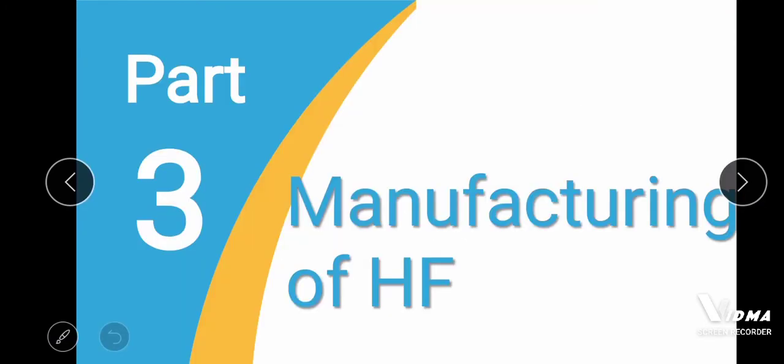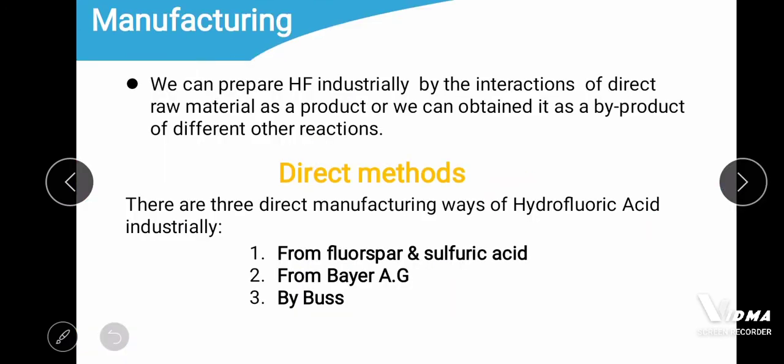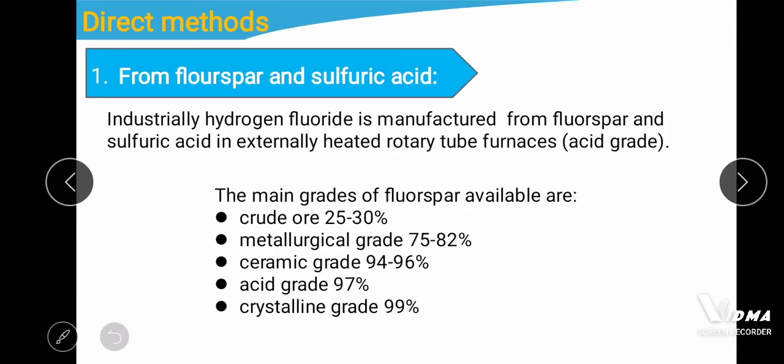Part 3, the main part of the presentation, covers the manufacturing of hydrofluoric acid. There are three manufacturing methods: production from fluorospar and sulfuric acid, the Bayer AG method, and the Buss method. Internationally, hydrogen fluoride is manufactured from fluorospar and sulfuric acid in extremely heated rotary tube furnaces. The main grades of fluorospar available are crude or metallurgical grade, ceramic grade, acid grade, and crystalline grade.